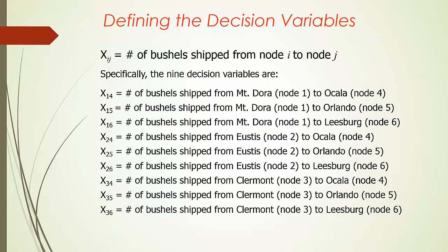Now let's see how we are going to define the decision variables for this transportation program. A simple way is to define x subscript ij as the number of bushels shipped from location i to location j, where i could be 1, 2, or 3, and j could be 4, 5, or 6. For example, x14 is the number of bushels shipped from Mount Dora, location 1, to Ocala, location 4, and x34 is the number of bushels shipped from Claremont, location 3, to Ocala, location 4.